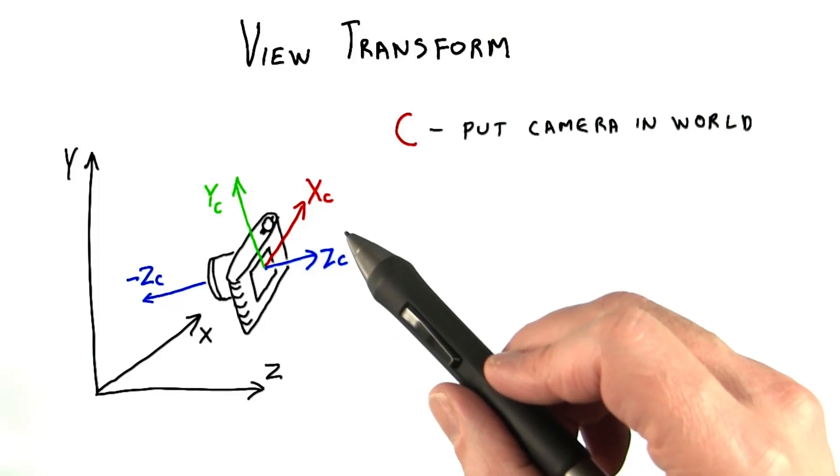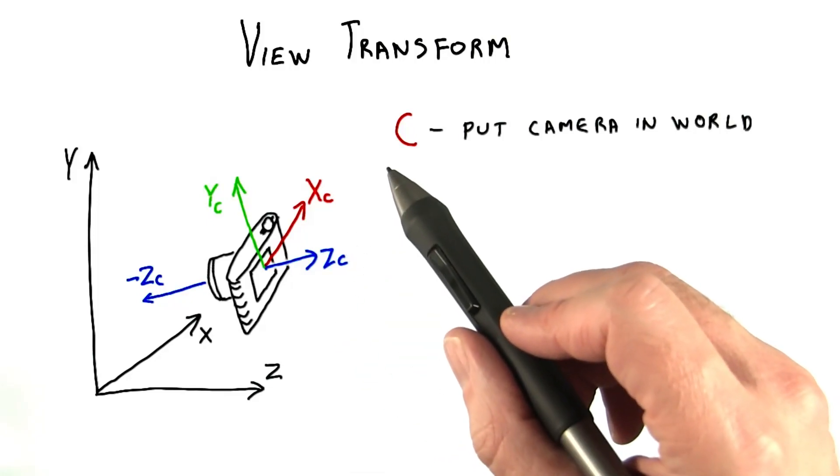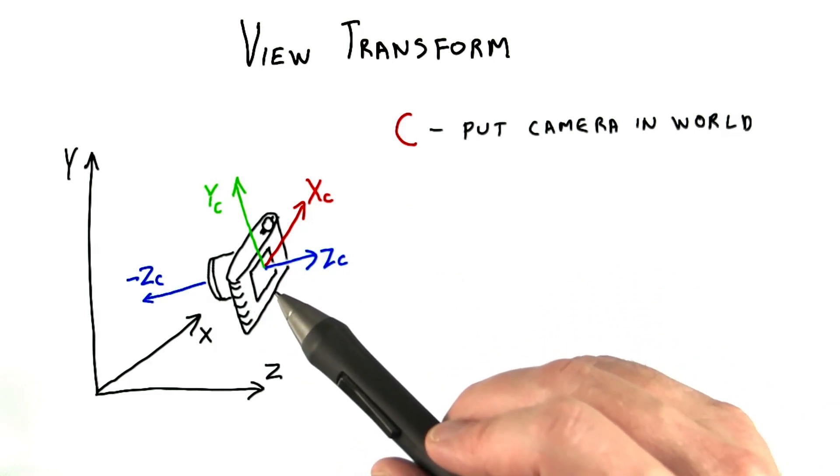We've just shown how to position and orient a camera in world space. If we apply this matrix C to some camera object, the camera then gets placed in the world.